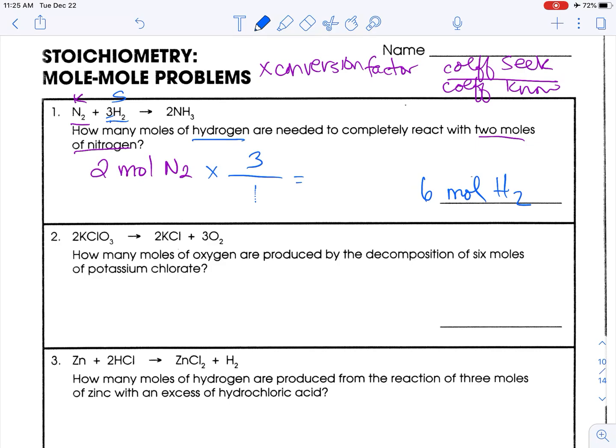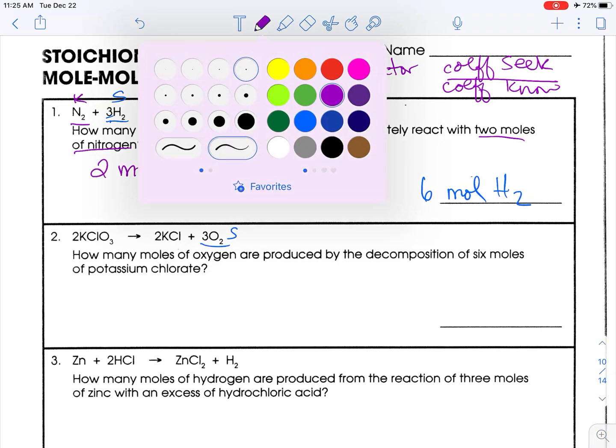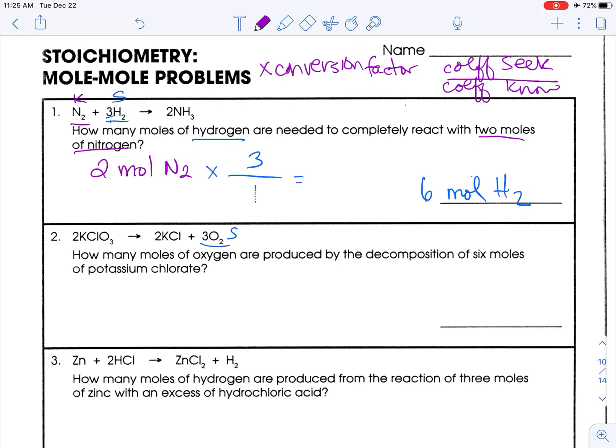These are all balanced chemical reactions, so we don't need to check it every time. They're not always going to be, so make sure you do. But this worksheet, they are. How many moles of oxygen are produced by the decomposition of six moles potassium chlorate? I seek oxygen. Even though oxygen is part of this, I'm looking for just elemental oxygen. This is what I seek. And what do I know? I know six moles potassium chlorate. This is what I know.